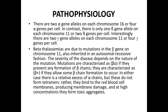Beta thalassemias are due to mutations in the beta genes of chromosome 11, also inherited in an autosomal recessive fashion. The severity depends on the nature of the mutation. Mutations are characterized as beta-zero if they prevent any formation of beta chains, or beta-plus if they allow some beta chain formation. In either case there is a relative excess of alpha chains, but these do not form stable tetramers — they bind to the red blood cell membrane producing membrane damage.